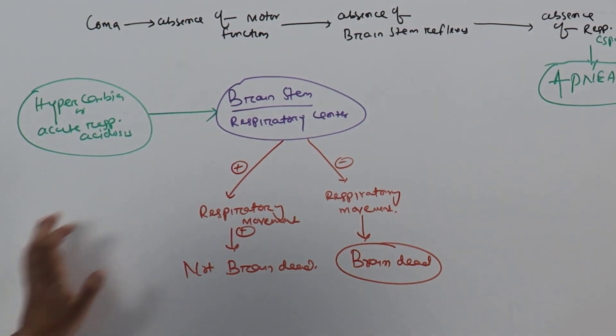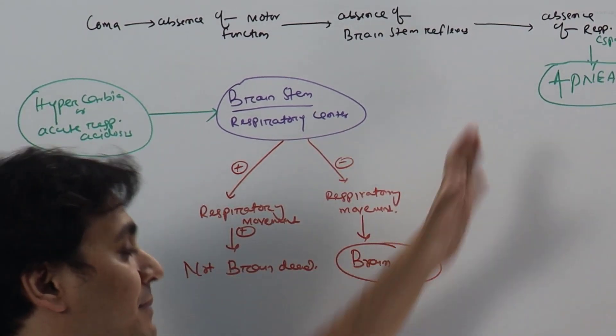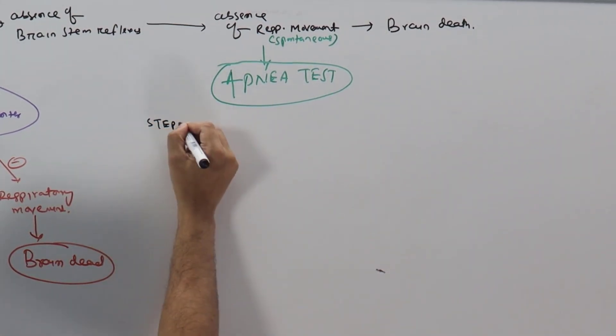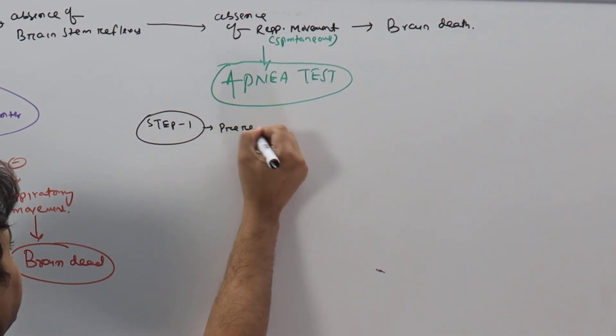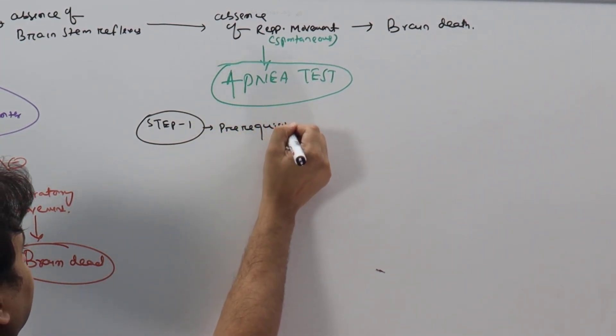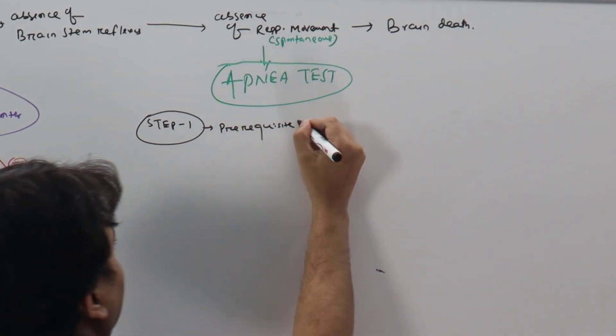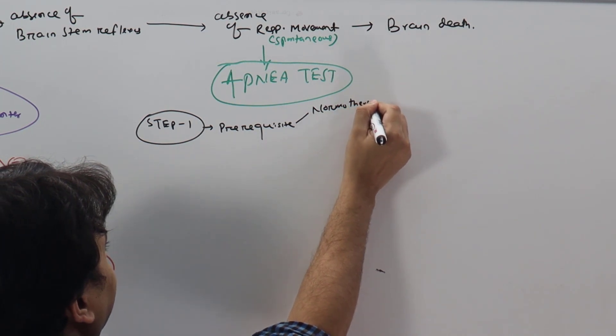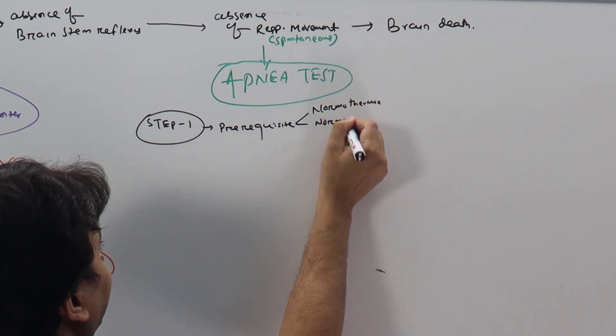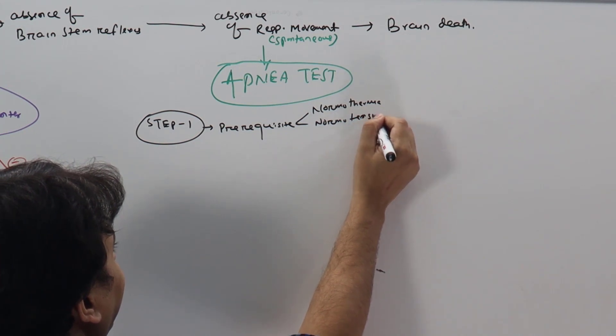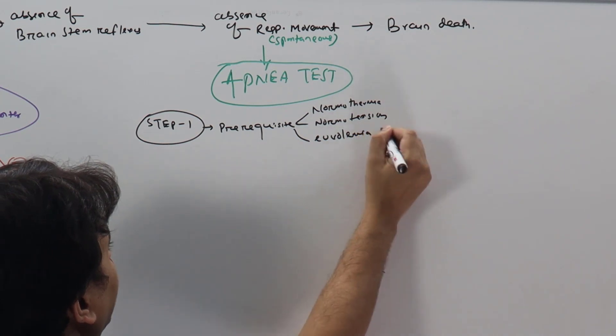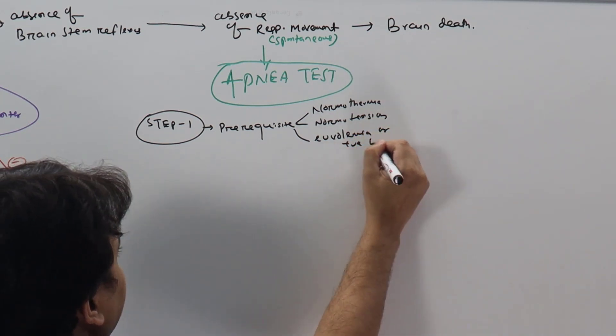Now let us see how step by step we can do apnea test. Step one: patient prerequisites are normothermia, normotension, and euvolemia or positive fluid balance.